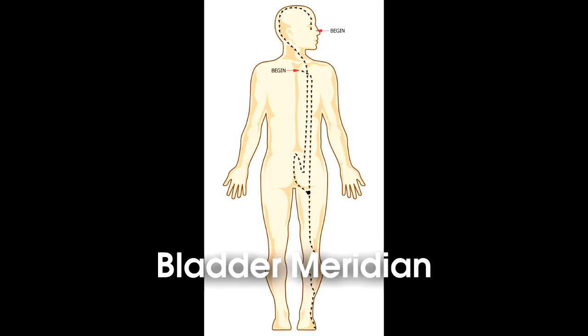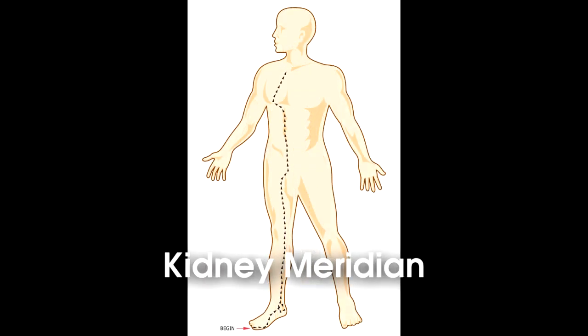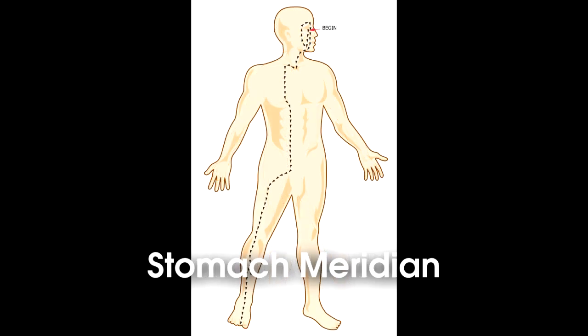A river or series of acupoints is called a meridian. There are a number of different meridians in the body. Essentially, if all those meridians are running smoothly, then the body is as self-healing as it possibly can be.